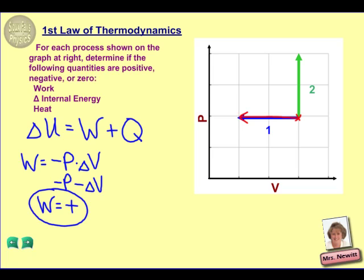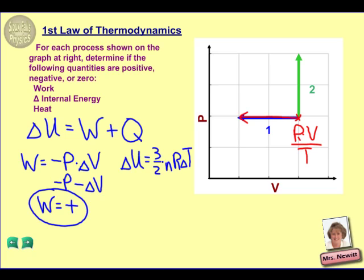The next thing we usually move to is delta U. Remember that delta U is related to temperature, and we have an equation: three-halves times NR delta T. So if we know what our temperature is doing, that will allow us to figure out what delta U is doing. We have two different points on our graph, and we can use our ideal gas ratios: PV over T at point one must equal PV over T at point two.